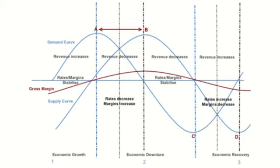During a period of economic growth, demand and supply increase. In this particular normal scenario, capacity and volumes are assumed to be growing at a similar pace, which means that rates and margins are stable.